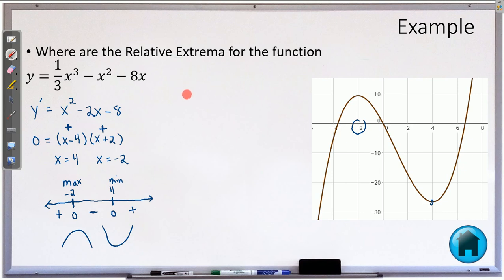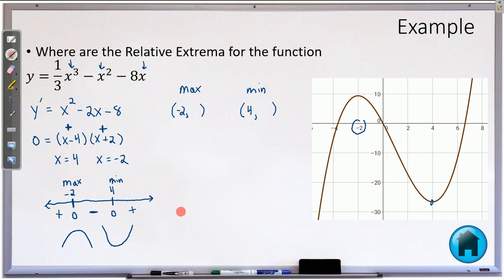If you actually wanted to figure out what those points were — what is your actual max? It is the point negative 2 comma something. And what is your min? It is the point 4 comma something. If you want to figure out those y values, you have to plug the x values back into the original function. The most important part for us is the first derivative test, which is this process over here.